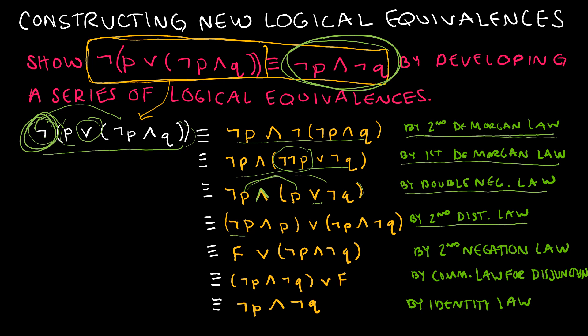Now I'm replacing NOT P AND P with FALSE, because we know by the second negation law that if we have NOT P AND P that it must be FALSE. It is a contradiction. Now I have to switch the order, which is what I did here by the commutative law for disjunction. And I'm okay if you just write the commutative law.